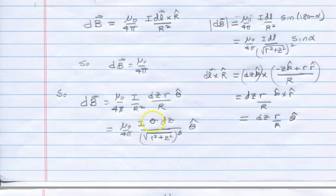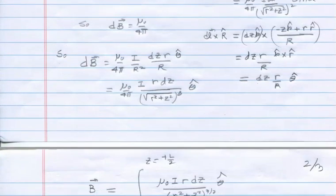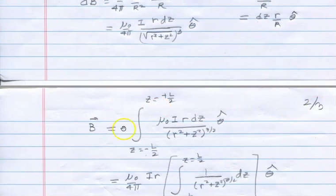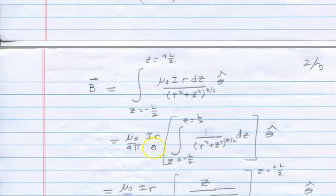So now you just add up all the DBs over Z as Z goes from minus L over 2 to plus L over 2. And so that's just the continuous sum, minus L over 2 to L over 2, of this quantity here. I can pull out the constant terms that don't depend on Z. Theta-hat doesn't depend on Z. So you pull that one out. The mu-naught I, little r, I can pull that out and I'm left with this integral.